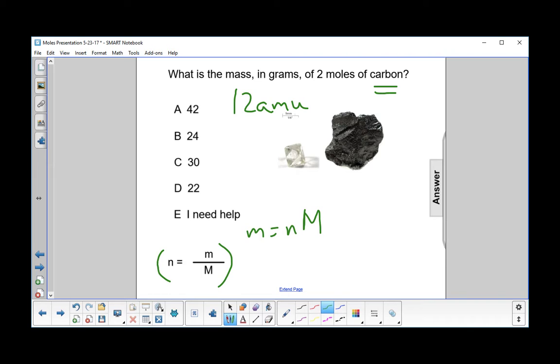So now what do we have? The mass is the number of moles—they give us two. The molar mass is 12 grams. Multiply them together, you get 24 grams. And the answer is B.